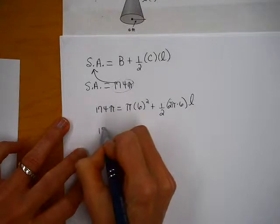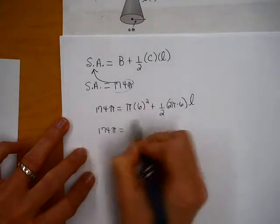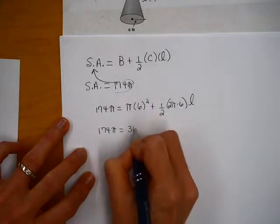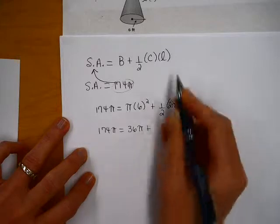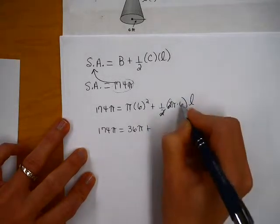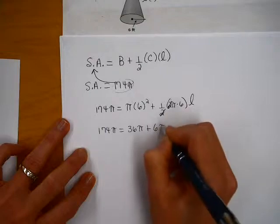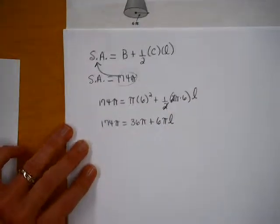So, I have pi times radius squared, so that'd be 6 squared, plus one-half times the circumference, which is 2 times pi times the radius, which is 6, times the slant height. So, I'm just going to keep that L, because I don't know it. Alright, so I'm going to bring down 174 pi on this side. 6 squared is 36, so this is 36 pi, plus I know this 2 and this 2 reduce, so this is just 6 pi times the slant height, or 6 pi L.